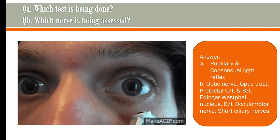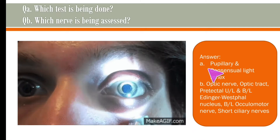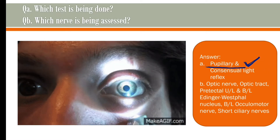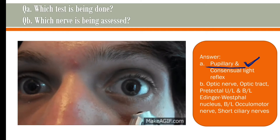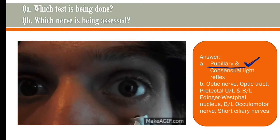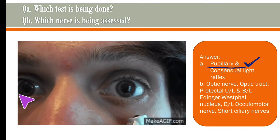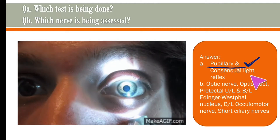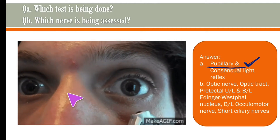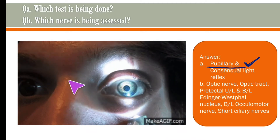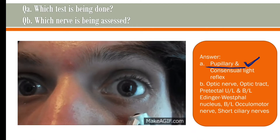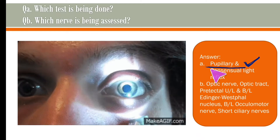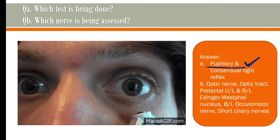In MCQ format with two options, the answer will be pupillary light reflex. In this image you can see constriction in both eyes, somewhat in the opposite eye as well. But the condition for consensual light reflex requires placing a barrier or shade so that no direct light reaches the opposite eye. So the better answer will be pupillary light reflex or direct light reflex.